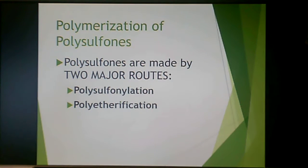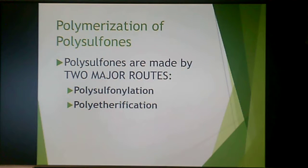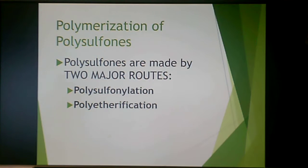Polysulfones are made by two different routes for polymerization: polysulfonylation and polyetherification. That depends on whether or not you have an ether type group, but polysulfonylation and polyetherification are the two major routes.